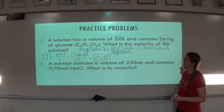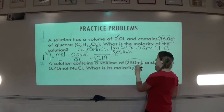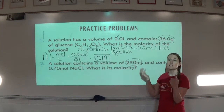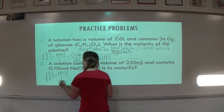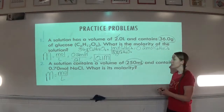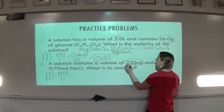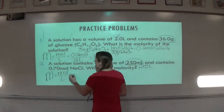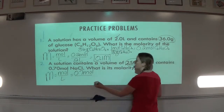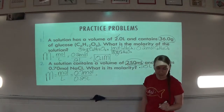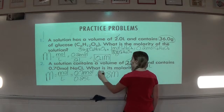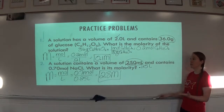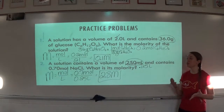The second problem: a solution contains a volume of 250 milliliters, so I need to fix that — change it to liters — and contains 0.7 moles of NaCl. This time I was given moles but had to fix milliliters to liters. Molarity is moles per liter. Remember, 1 liter equals 1,000 milliliters, so 250 mL becomes 0.25 liters. Plugging in: 0.7 moles divided by 0.25 liters gives 2.8 M. The main thing is making sure you plug in the correct units — moles of solute per liter of solution.